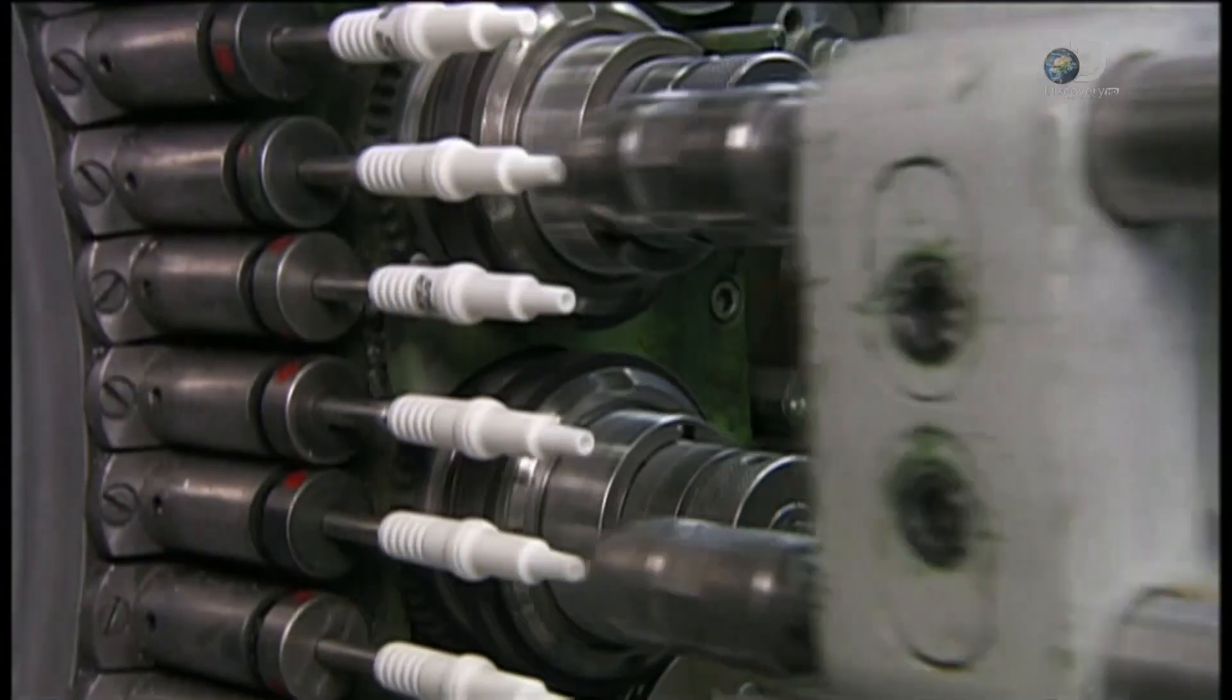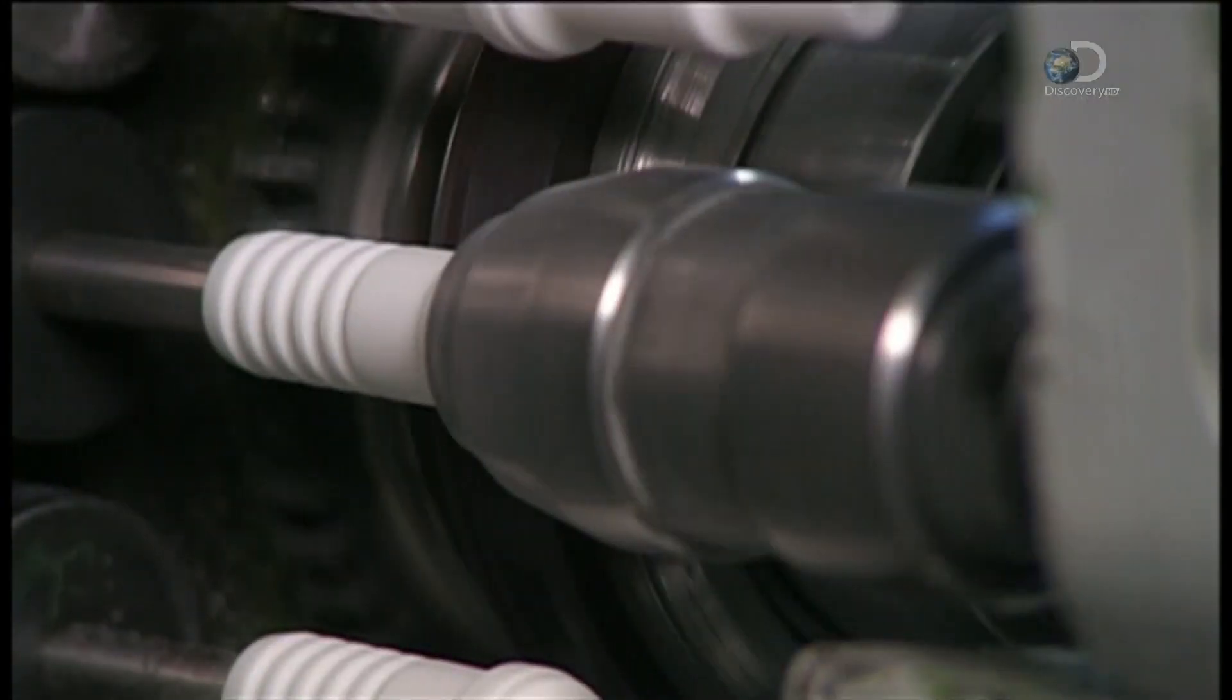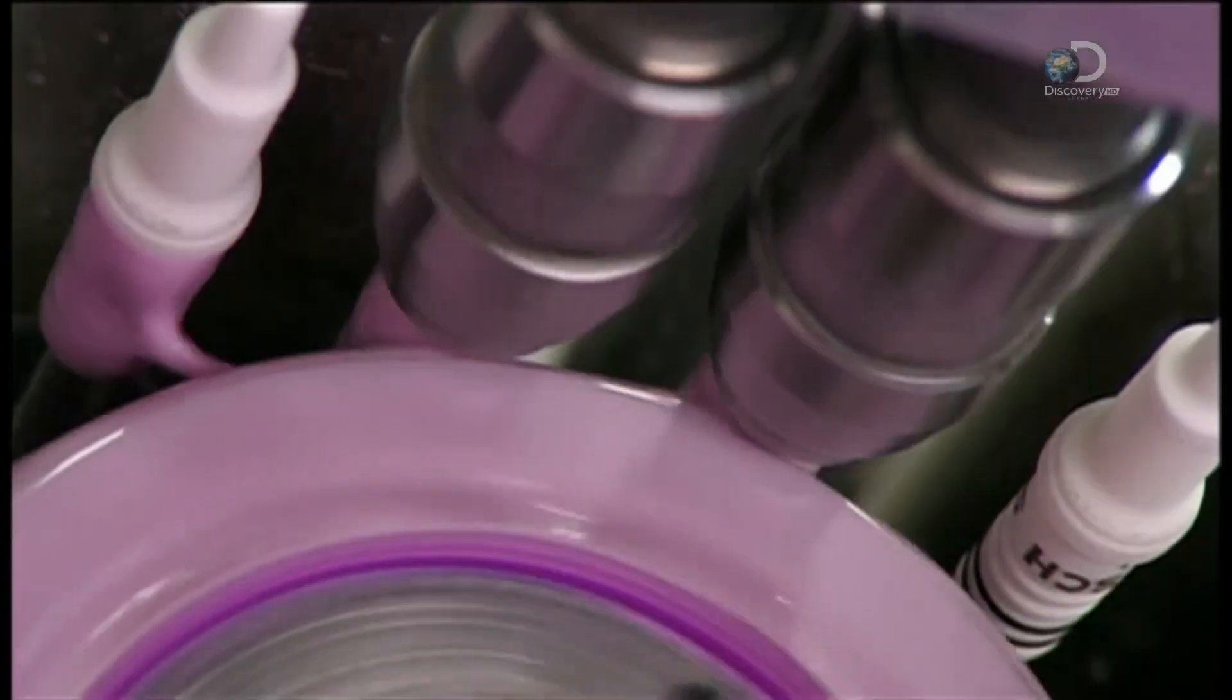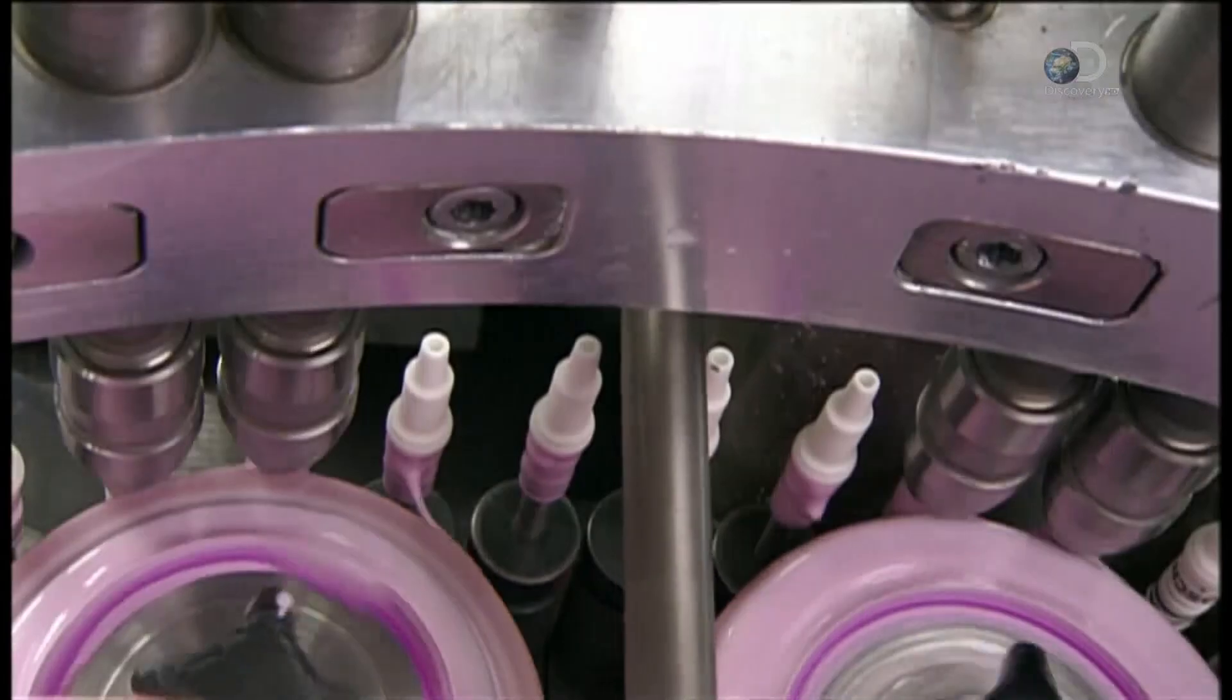The ceramic insulators are now out of the kiln, and it's time to roll on the insignia. The insulators then brush by a rubber wheel that coats them with a glaze as a protective finish.